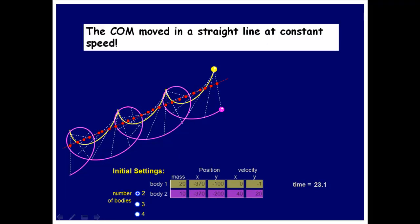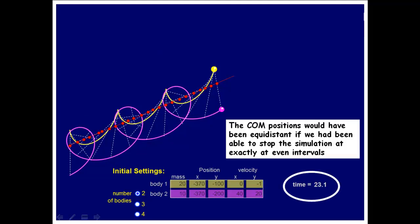This video took me about two hours to create and about 20 seconds to implement here. The center of mass — look at this — each one of these points moved along a straight line, and that's what we derived in our last lesson. If I had been able to stop that simulation exactly at even intervals, you would see all these points would be equidistant from one another, but they jump around a bit because sometimes I missed the timing.